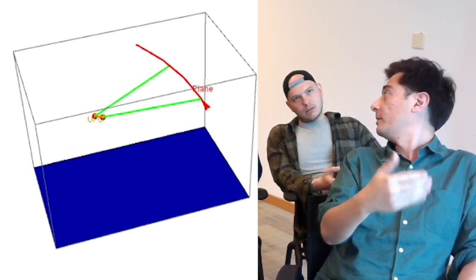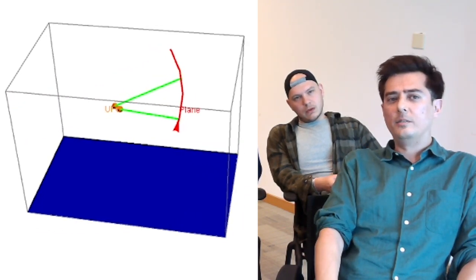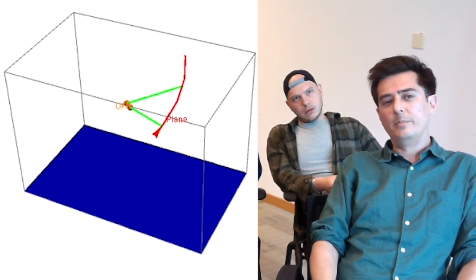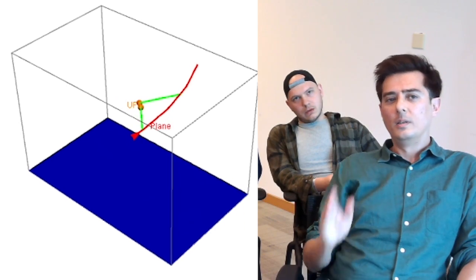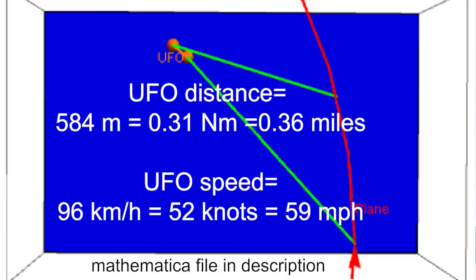The rest of the calculation is more or less the same because even in the previous calculation, we knew what these different vectors were — those are pretty much unchanged. The only new piece of information is the actual arc trajectory. By calculating the trajectory of the jet using the banking angle, we found that the distance the UFO could have covered is about 584 meters. That gives us a velocity of 95.66 kilometers per hour, or 51.65 knots.